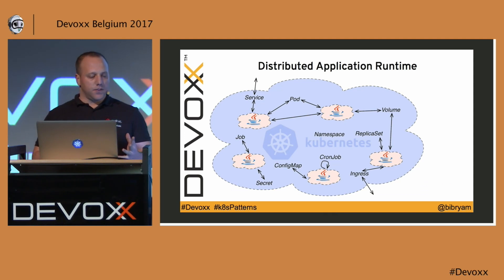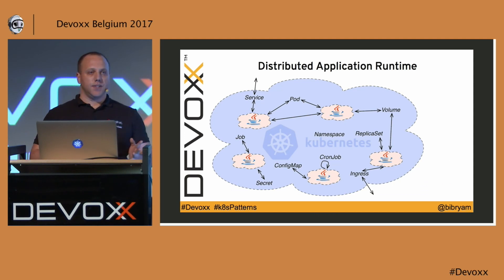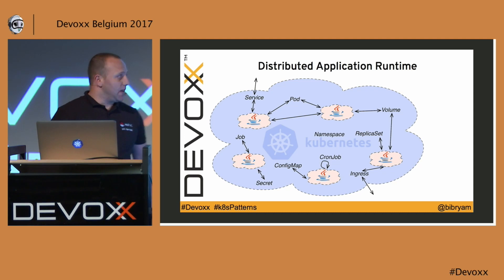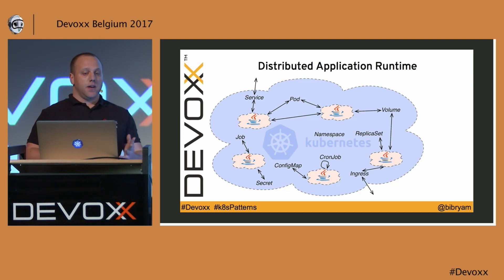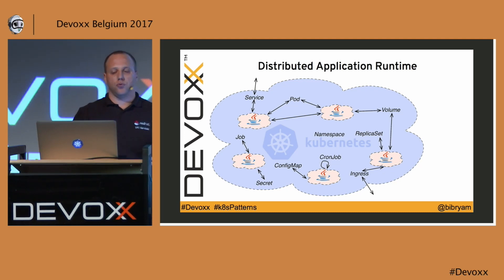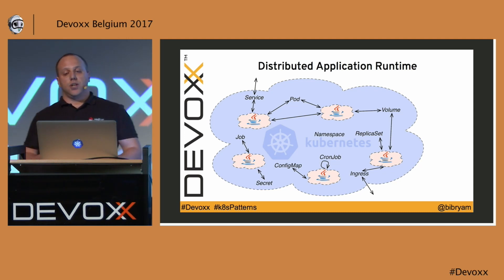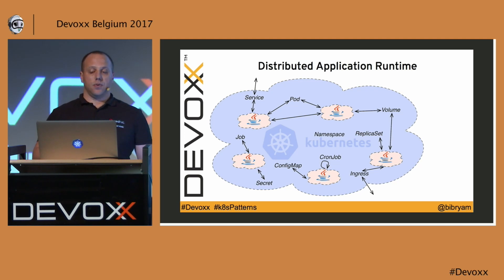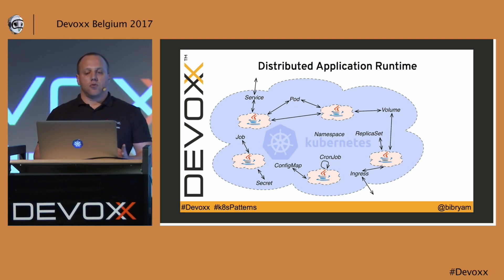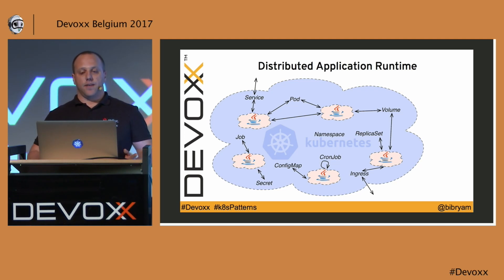In my head, Kubernetes is like a distributed application runtime which controls lots of Java applications. Some of these applications may be interacting between themselves — maybe two containers in one pod talking to each other over localhost, or containers talking over volumes, or a cron job controlling starting and stopping. The point is Kubernetes turns into a distributed runtime where you can have multiple JVMs doing stuff and Kubernetes will control the lifecycle of all these processes for you.